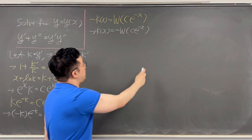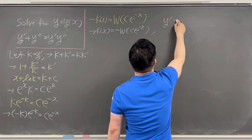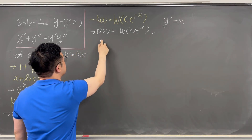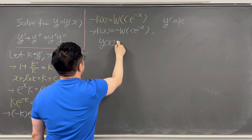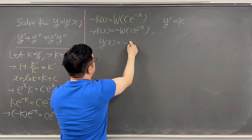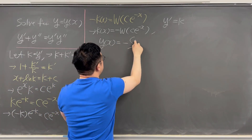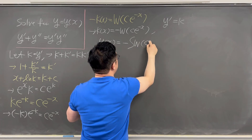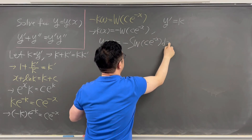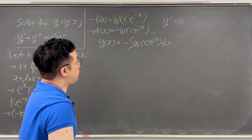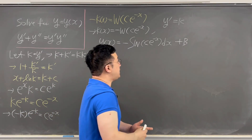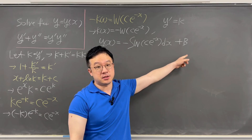Remember, we defined y' = k. So y(x) is obtained by integration: y(x) = −∫W(c · e^(−x)) dx + b, where both c and b are constants.